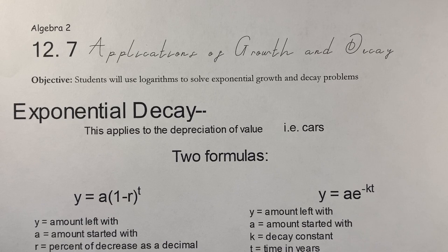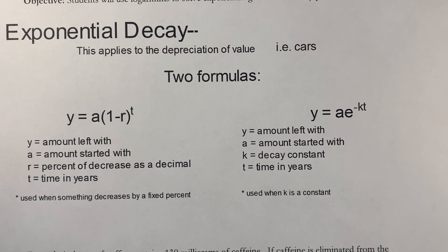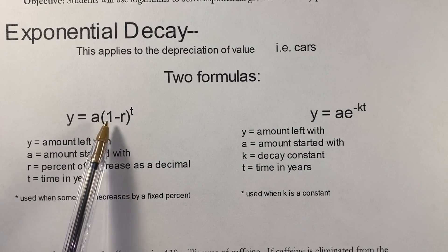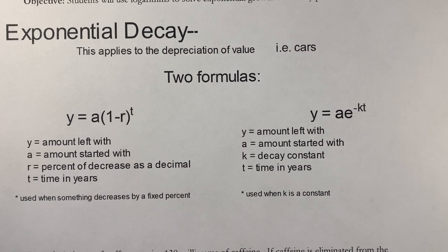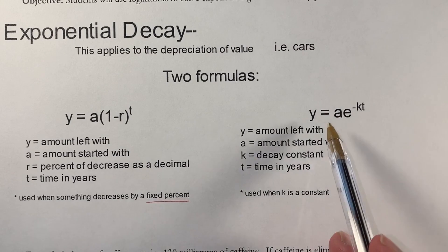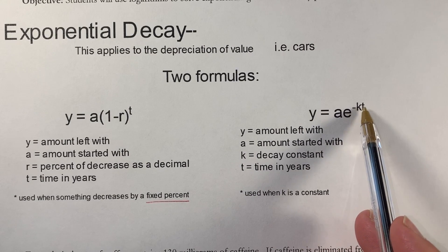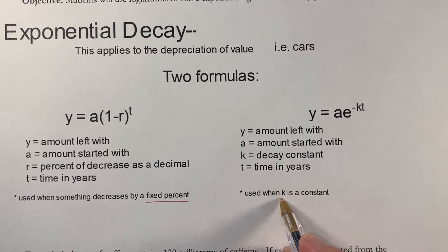For exponential decay there are two different formulas with two different uses. The formula y = a(1 - r)^t is for decay that happens by a fixed percent. The formula y = ae^(-kt) is for when you're decreasing by a constant.